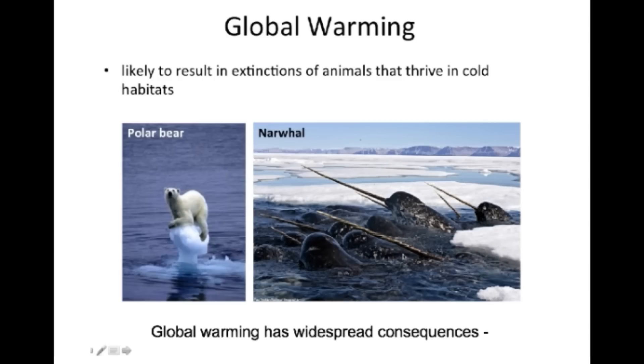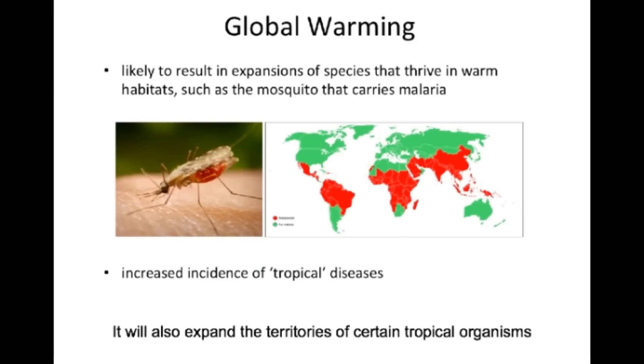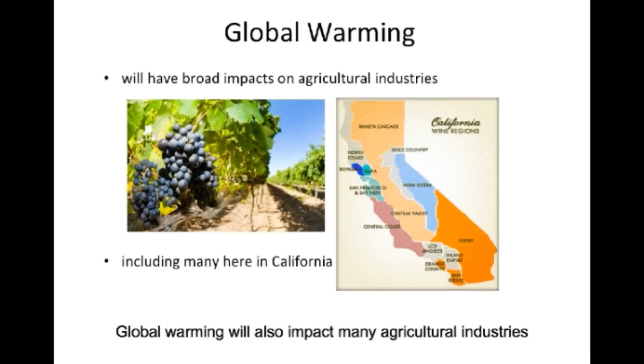Global warming has widespread consequences, including potential extinction of animals that thrive in cold climates, such as the polar bear and the narwhal. It will also expand the territories of certain tropical organisms, such as the Anopheles mosquito, which is the vector host for the malaria parasite. Global warming will also impact many agricultural industries, from the winemaking industry here in California to countries around the world that supply us with food.